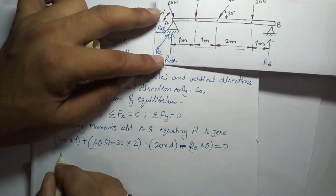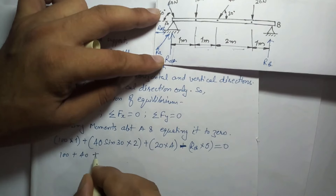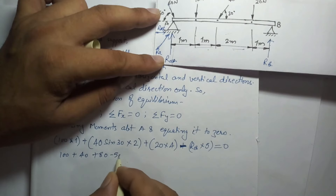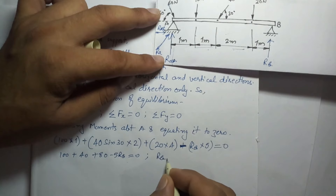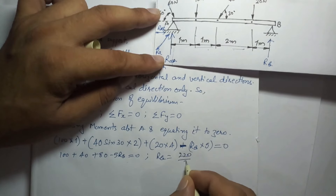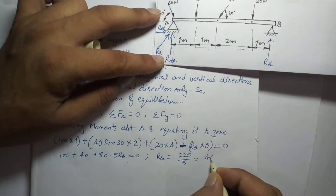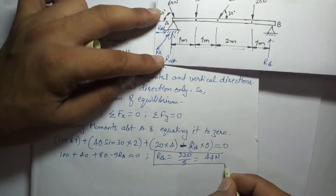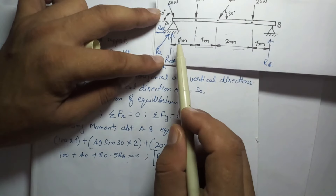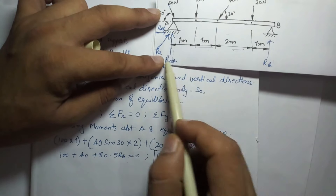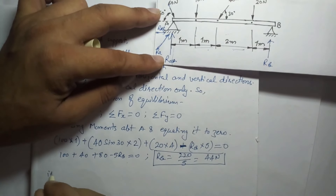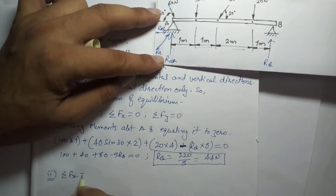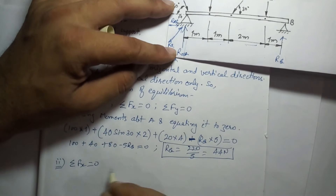This is the method to solve such problems: apply the moment of force equation and take the moment about either A or B to get one of the reactions. Solving: 100 plus 40 plus 18 minus 5Rb equals zero, giving Rb equal to 220 divided by 5, which is 44 newtons. Now we apply the second condition of equilibrium — forces in the x-direction equal to zero.